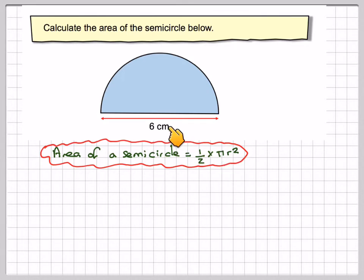Be careful here because I have the diameter. If I complete the circle, you'll see that it is the diameter of the circle. So I need to find the radius, which is a half times 6, which is 3 centimeters.